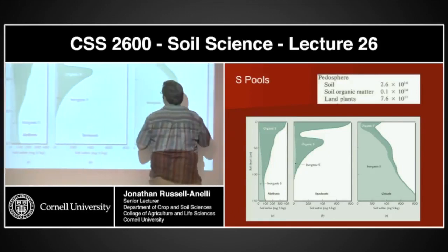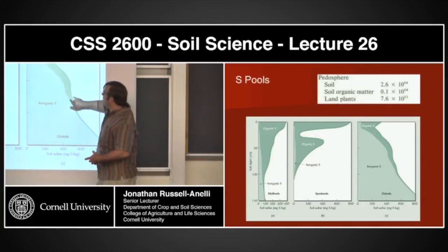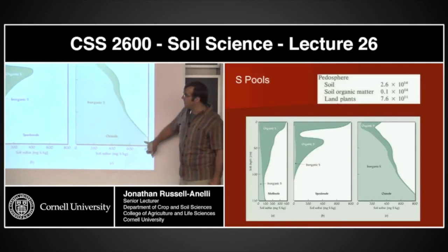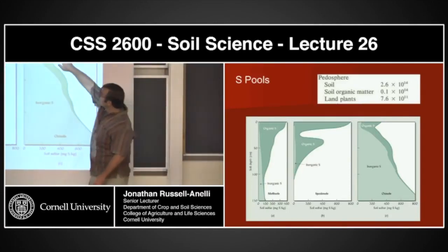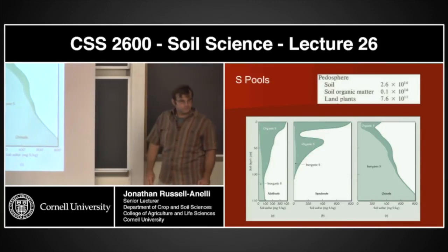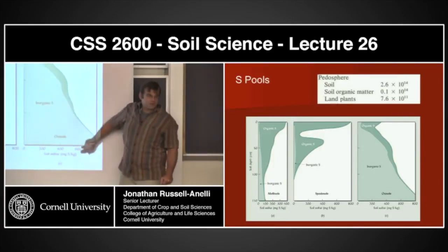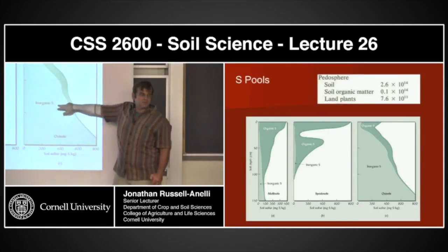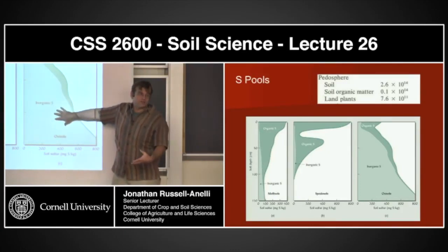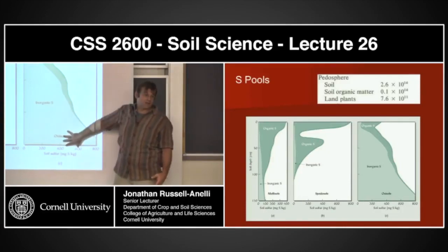Another good example is the Oxisol. Very small amount of organic matter dropping off — not anywhere near as much organic S as we see in Mollisols, but you see a dramatic increase in inorganic sulfur with depth. Does the inorganic S increase because it's anaerobic? No. With Oxisols, it has more to do with the movement of that material down — it's in the sulfate form. There isn't a lot of organic matter down there, so the sulfur is not associated with organic matter.